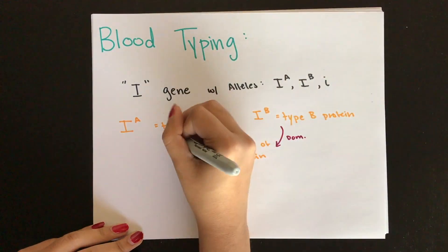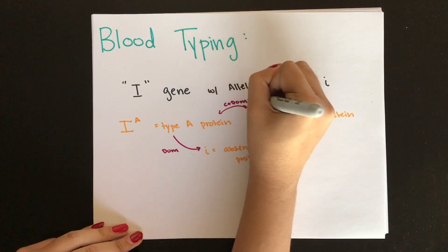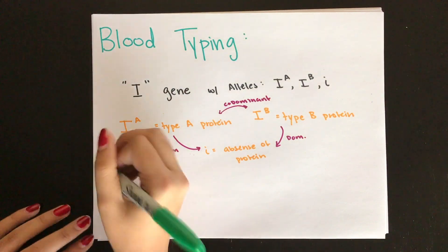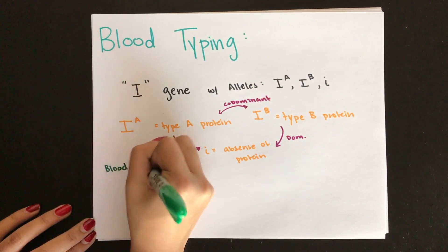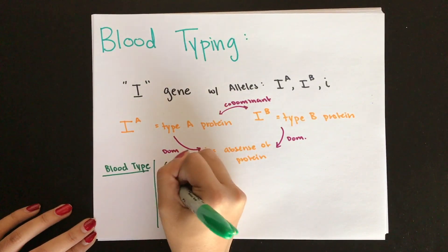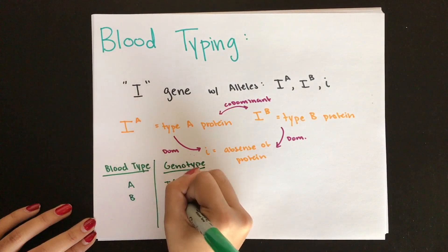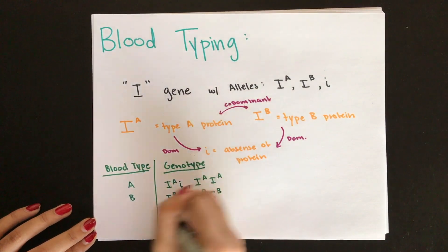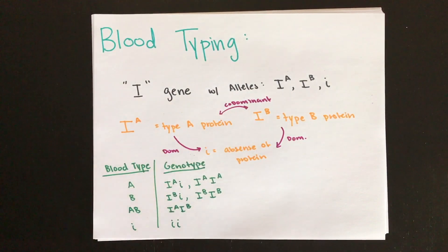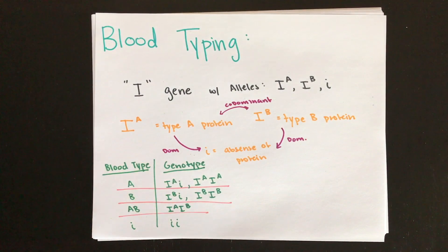The A and B alleles are both dominant to the lowercase i, but A and B are codominant to each other, meaning if you have both alleles together, they are both expressed instead of one being expressed over the other. You can pause the video here to look over the table — it follows the same genetics rules discussed earlier. Remember that lowercase i is equivalent to the O blood type.